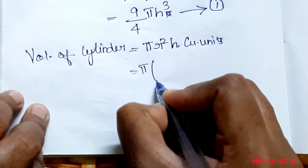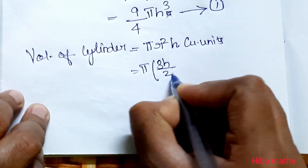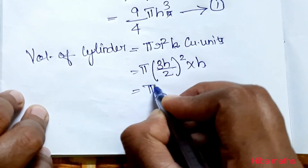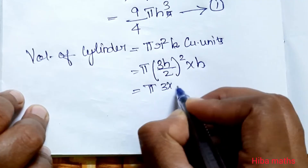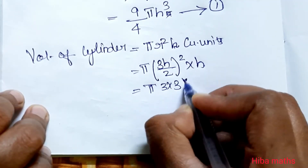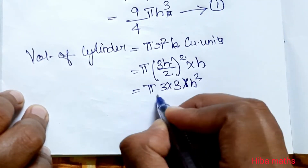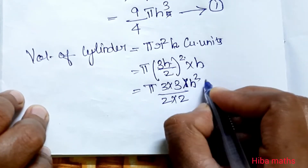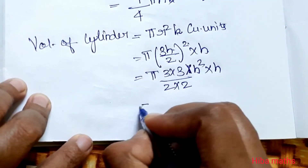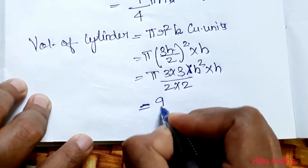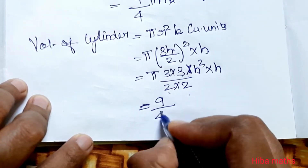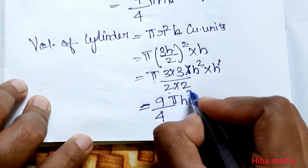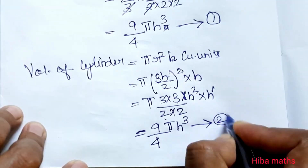Volume of cylinder = πr²h. Substituting r = 3h/2: π × (3h/2)² × h = π × (3² / 2²) × h × h = π × (9/4) × h² × h = (9/4)πh³. This is the second result.